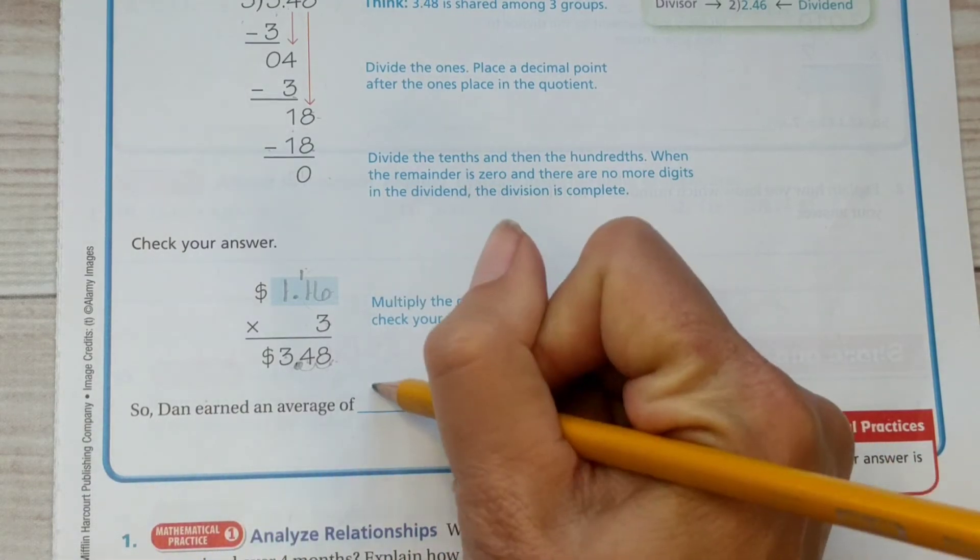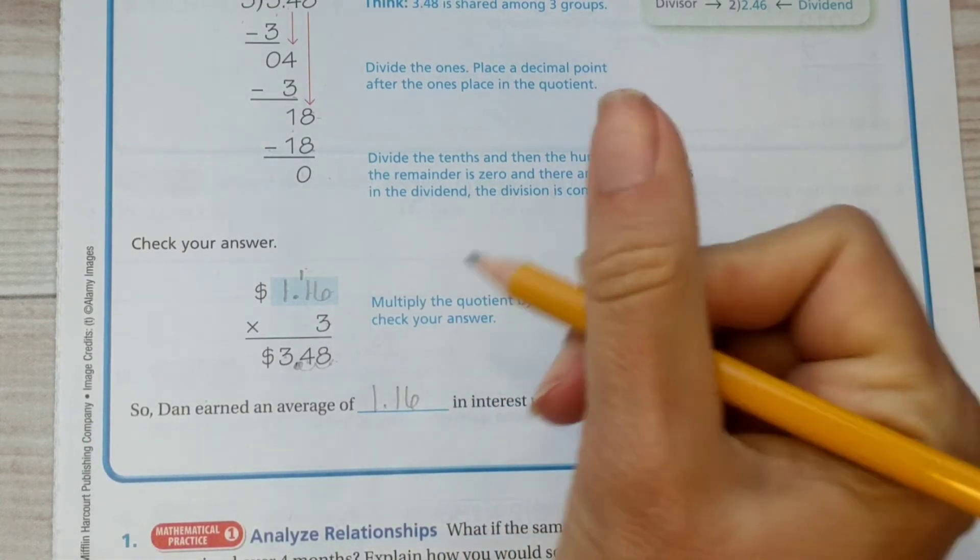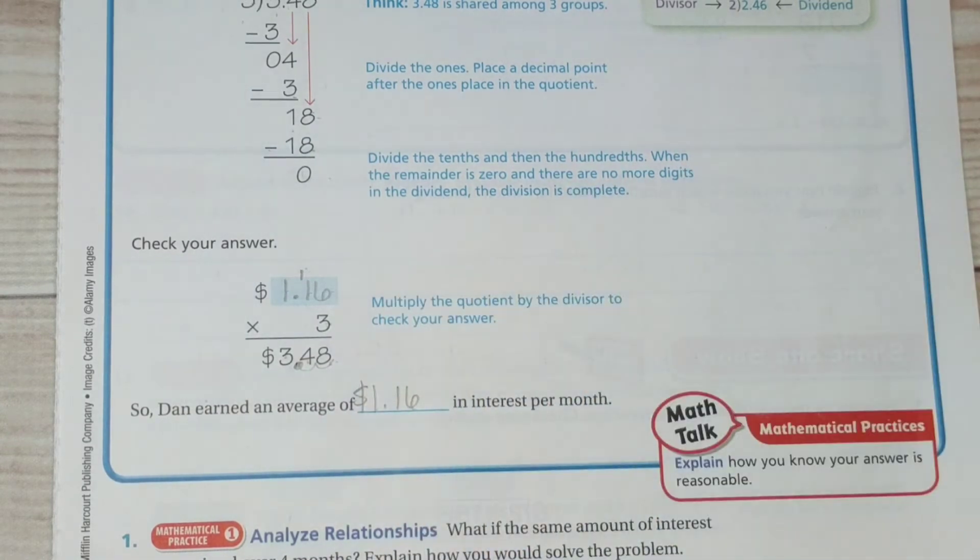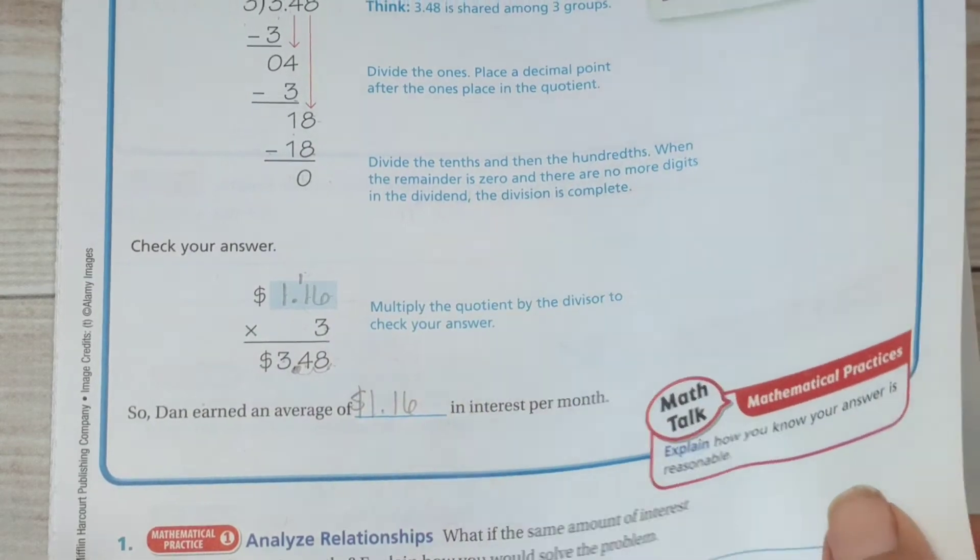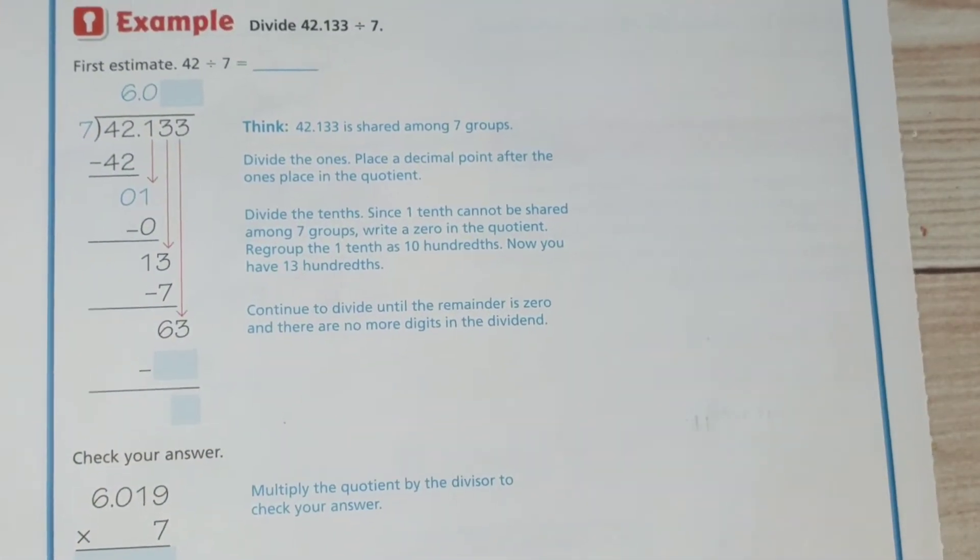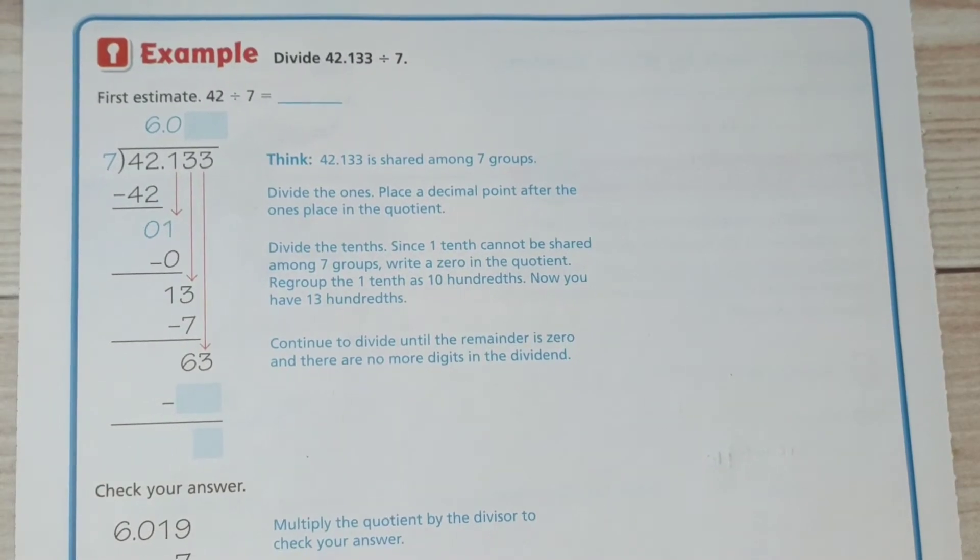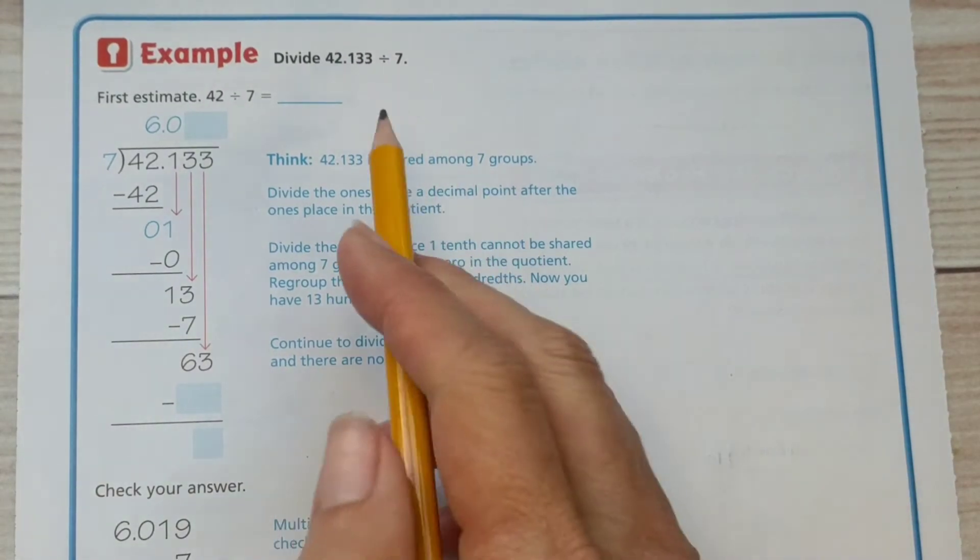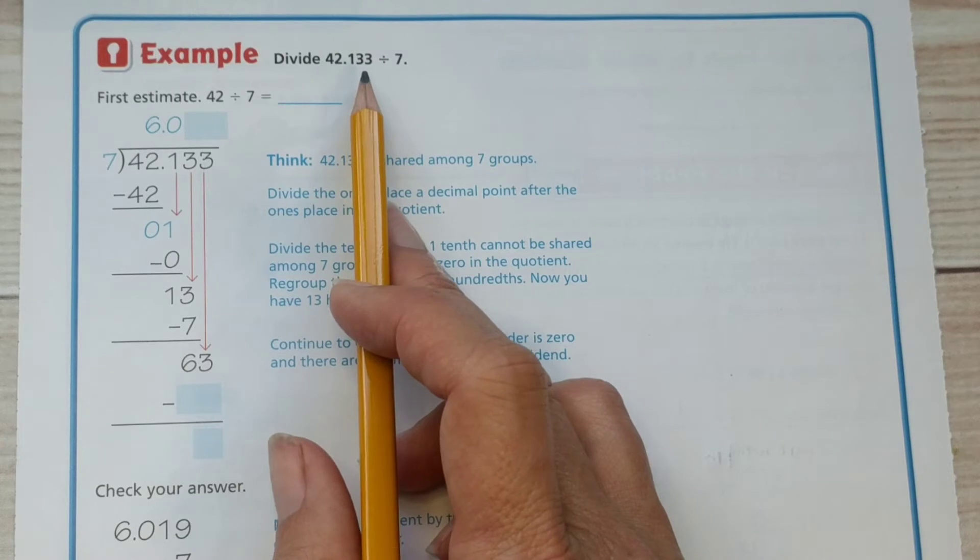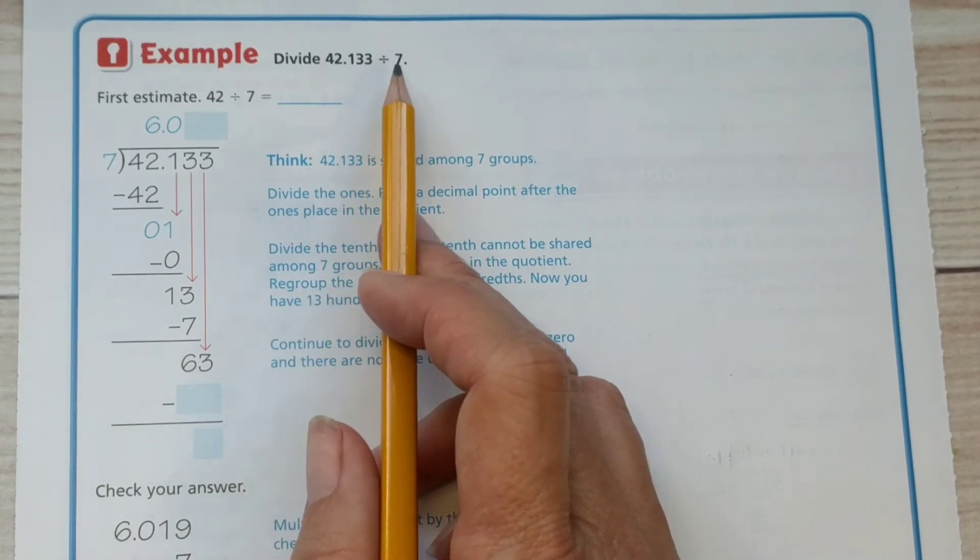So Dan earned an average of a dollar sixteen in interest each month. Let's take a look at the back side. Now we're on page thirty six.